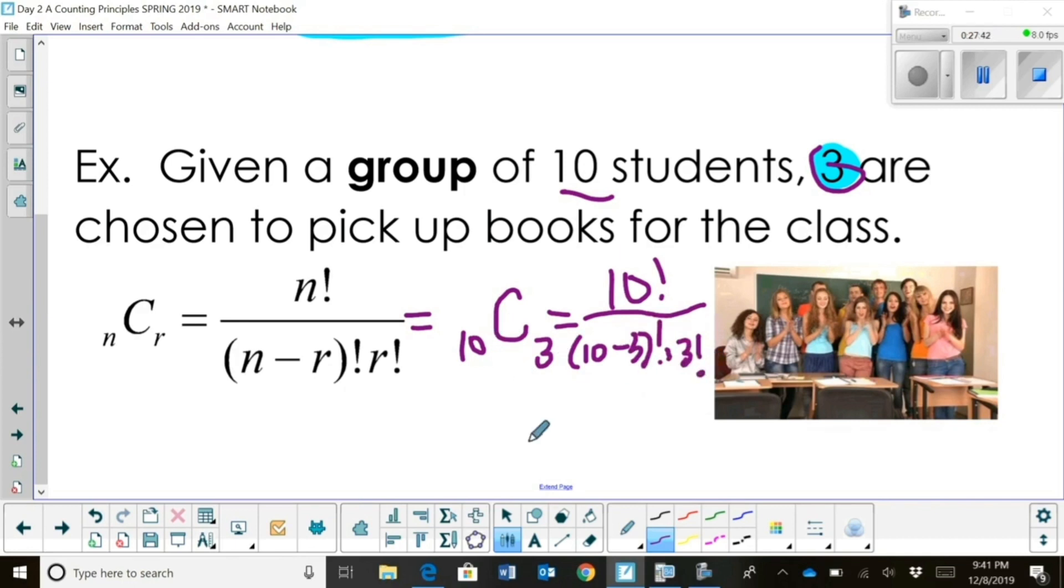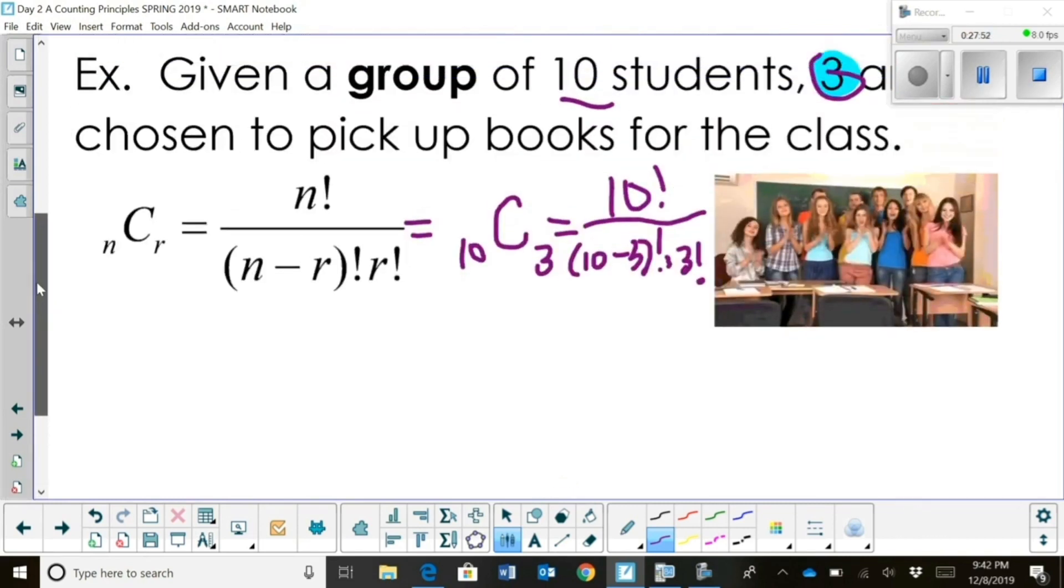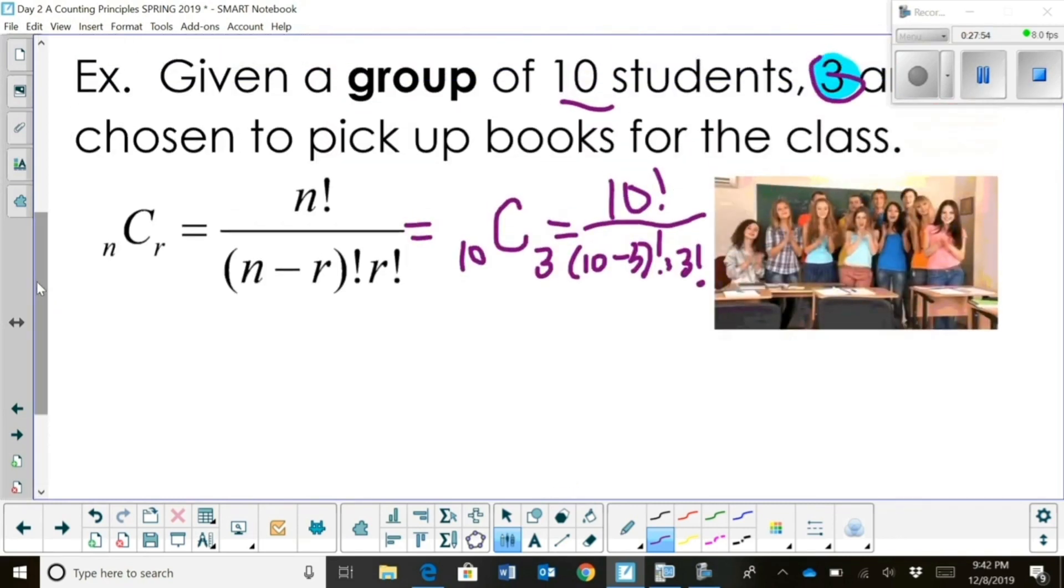So, we're dividing twice on a combination because we're going to have less possible outcomes than a permutation. A combination is always going to have less than a permutation with the same group and the same choices because you're dividing twice, and the order doesn't matter. So, take a minute and kind of think through that. Let's write this out.